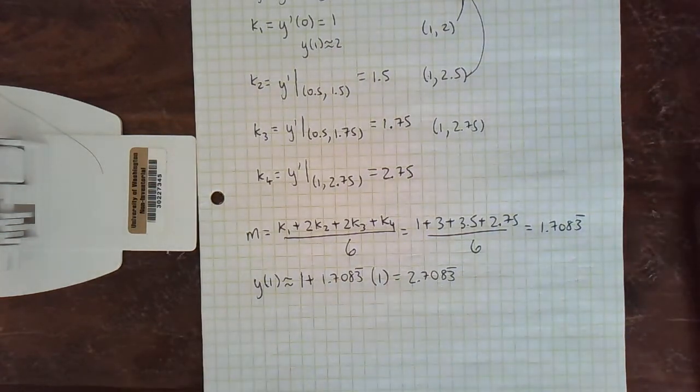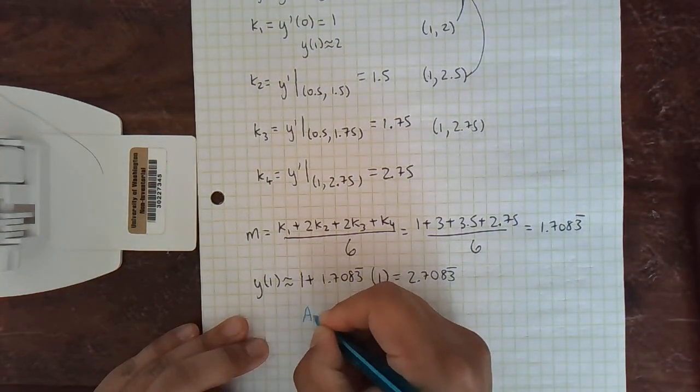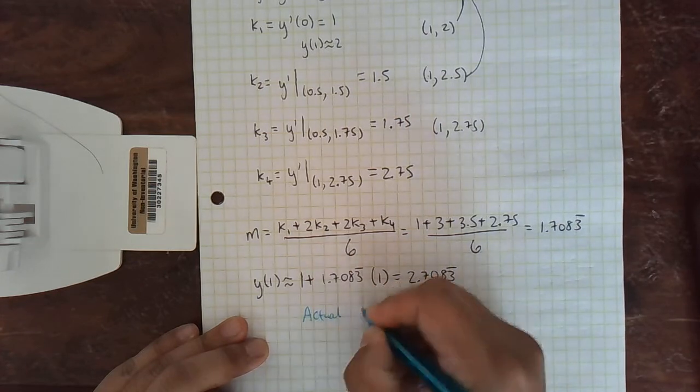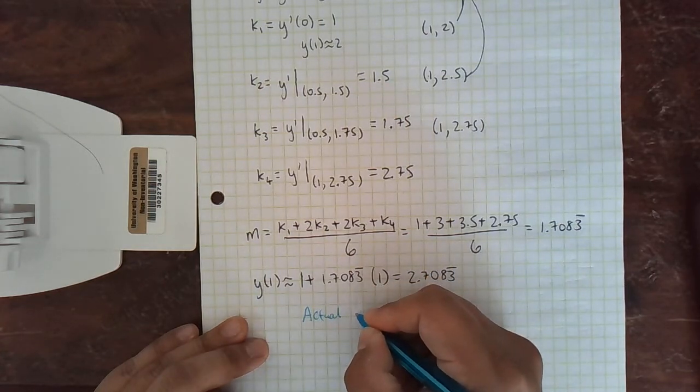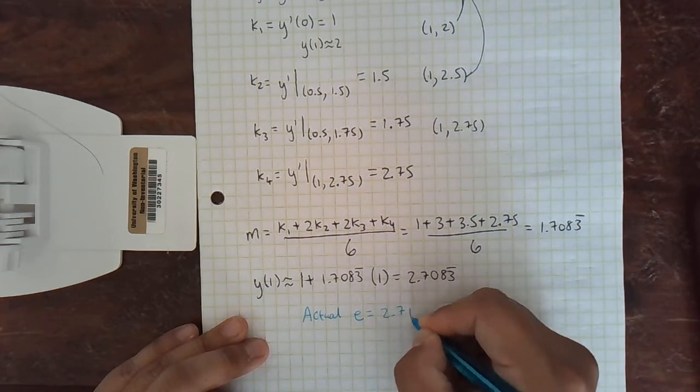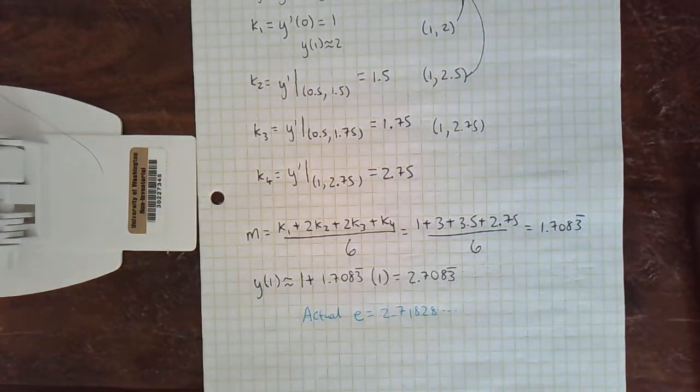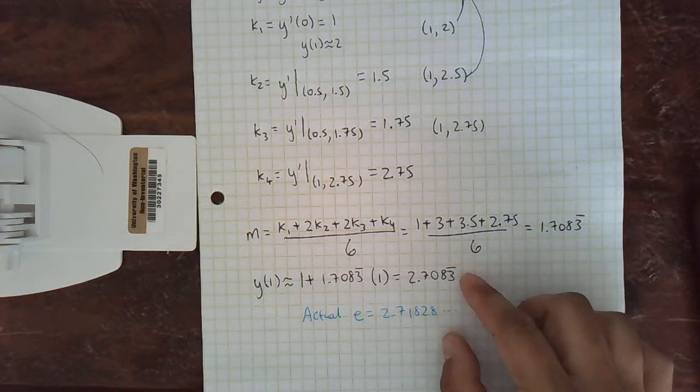Our actual value is e. e to the 1 is 2.71828 and so on. This goes on forever. So they're pretty close.